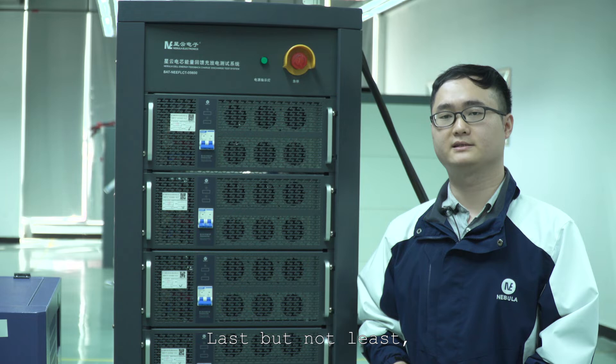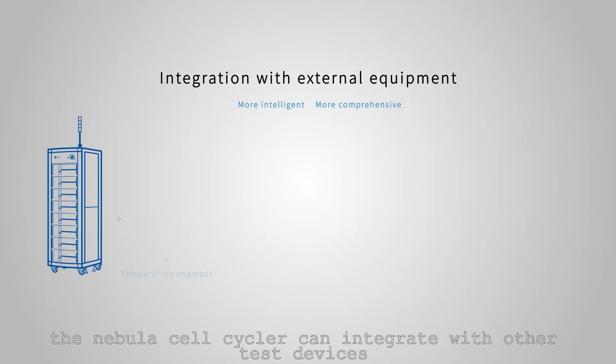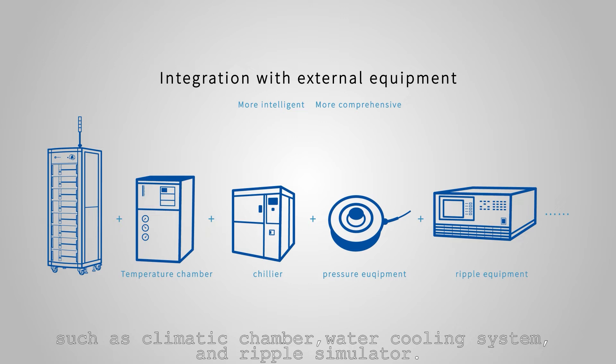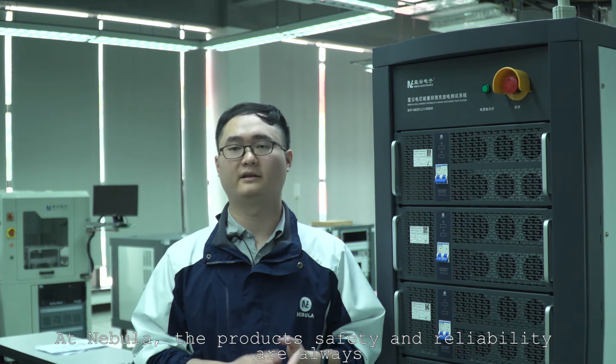Last but not least, the Nebula Cell Cycler can integrate with other test devices, such as climate chamber, water cooling system, and ripple simulator.